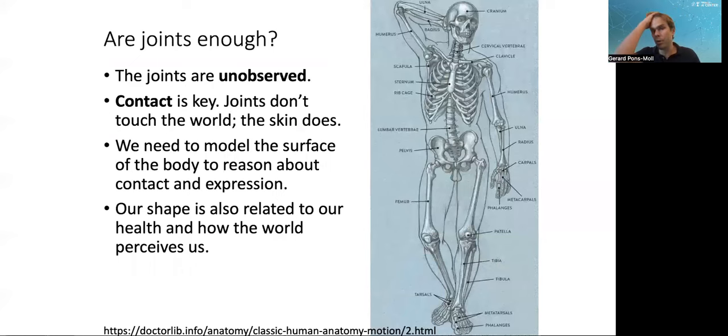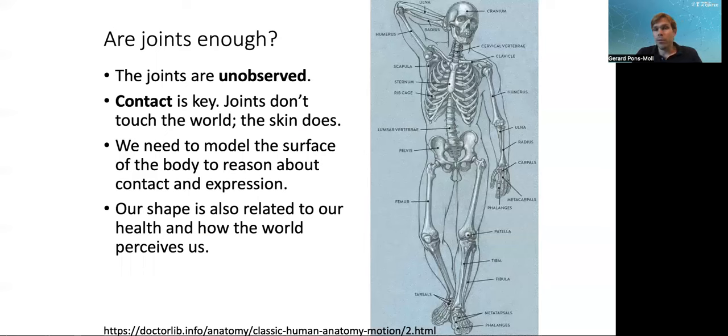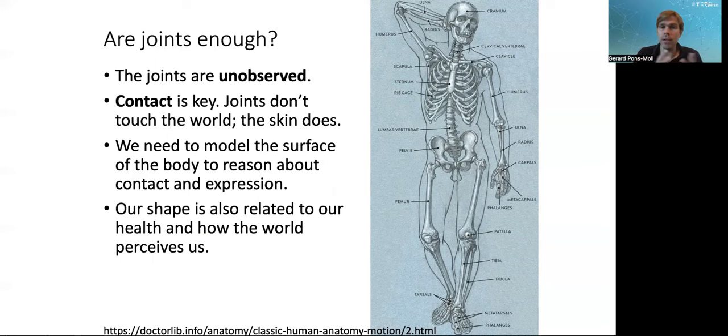First of all, these joints are not visible in images. These joints of the body are not visible. So they are not directly observable. So it's interesting that there's been so much interest in this when they are not even observable. If we want to model interactions with other people and with the world, we need to think about contacts. The joints don't contact the world, it's the surface. It's our skin that touches the world. So in that sense, it makes sense to model the surface as well.